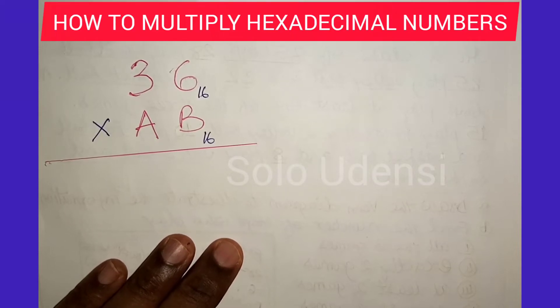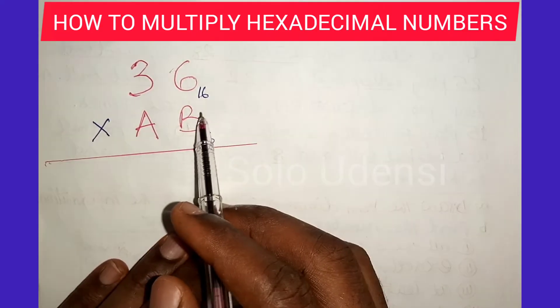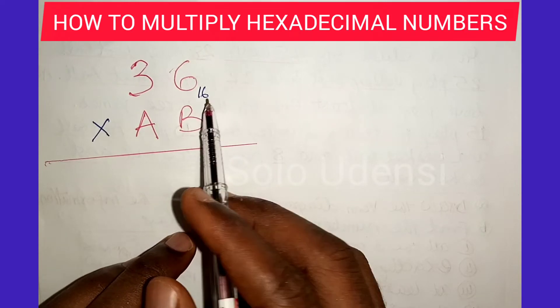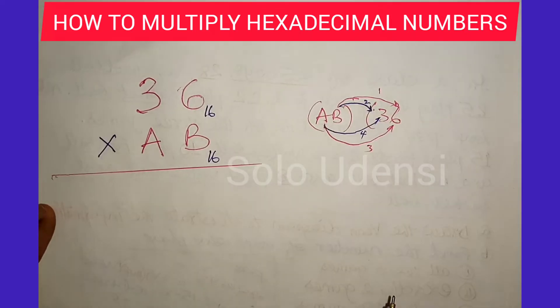In this video, we are going to multiply 36 and AB in base 16. First of all, we know that base 16 has 16 numbers starting from 0 to 15. So let's start.